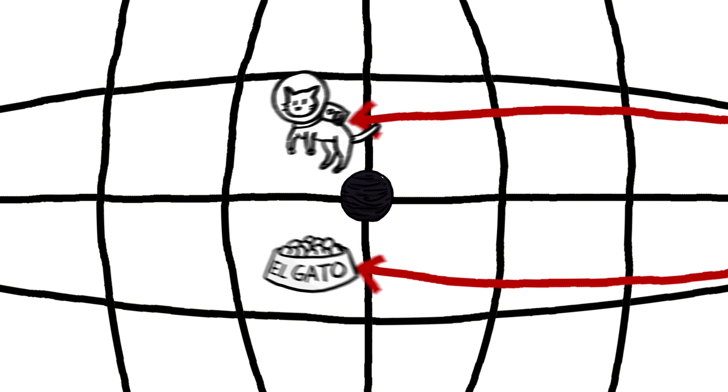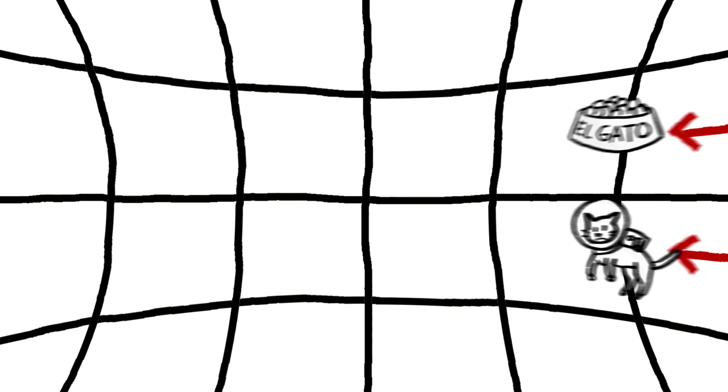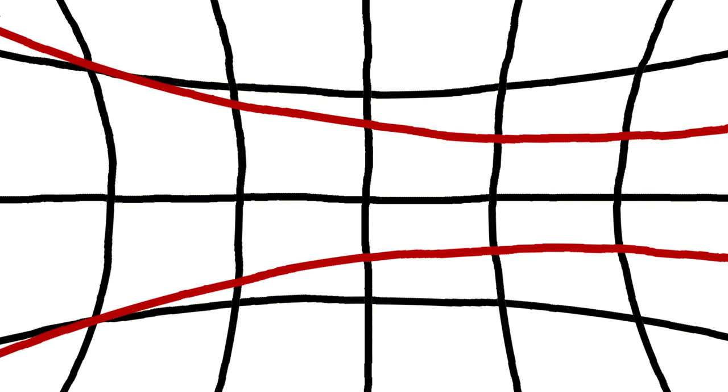In positively curved regions of space, like near planets or black holes, parallel paths converge. And in negatively curved regions of space, parallel paths, or even paths pointed at each other, diverge.